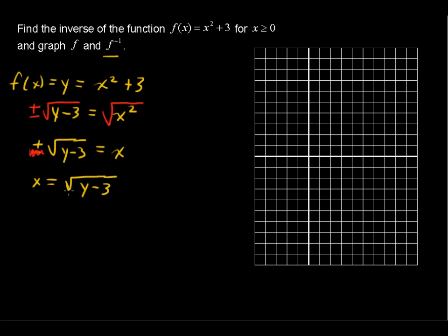And then that last step of finding the inverse is to swap x and y. So we'll just show that real quickly, swap x and y, and then make the new y the inverse function. So I will just put that in a different color, the inverse of f equals the square root of x minus 3.